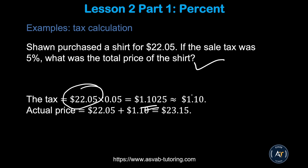When working with money, keep two decimal places. The tax amount calculated is $1.10 (rounded to two decimal places). Add that to the original price: $22.05 + $1.10 gives you a total of $23.15.